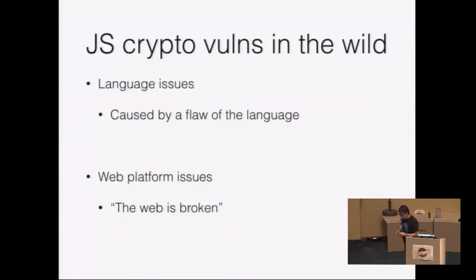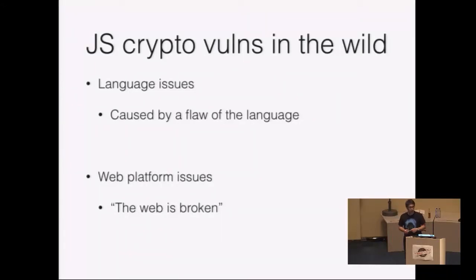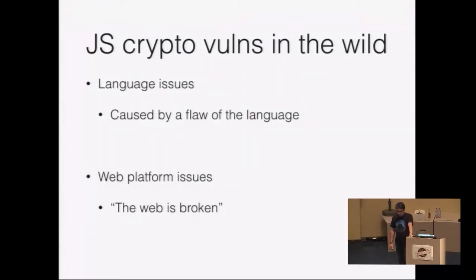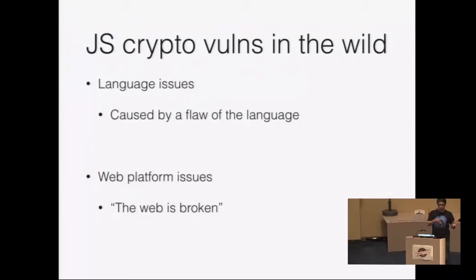When I started looking at those applications, I immediately found that the vulnerabilities or weird behaviors were caused by two distinct issues. The first is language issues — the fact that applications are written in JavaScript. The second group of issues is because of the web platform and how it works. We say in security circles that the web is broken, which is true. Those second-group flaws would still be present no matter if the applications were implemented in JavaScript or VBScript — they are more about how the web works than which language was used.